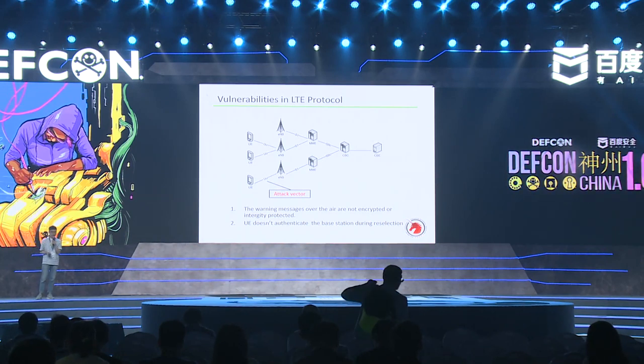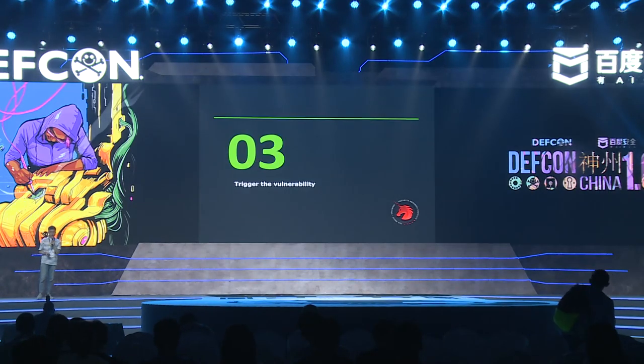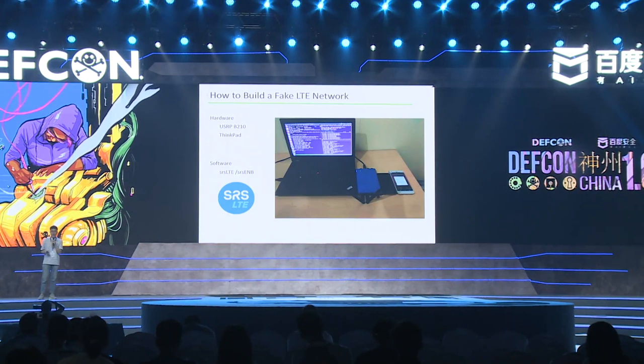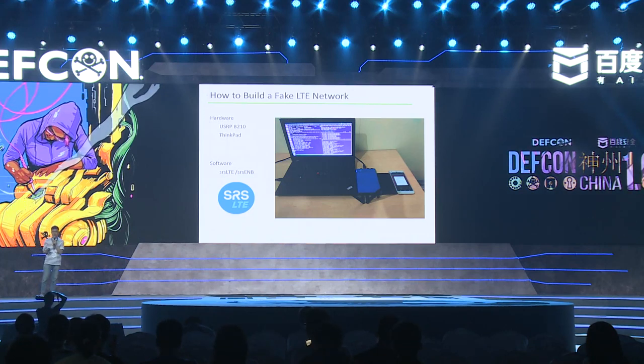So we can set up a fake base station. The hardware is not very complicated — we just need an SDR device to send the radio frequency signal and a laptop to run the IoT protocol stack. The SDR device we use is a USRP B210, and the laptop runs srsLTE. I recommend using a high-performance laptop because the LTE bandwidth is very large. The IoT protocol stack we use is the open-source srsLTE platform.